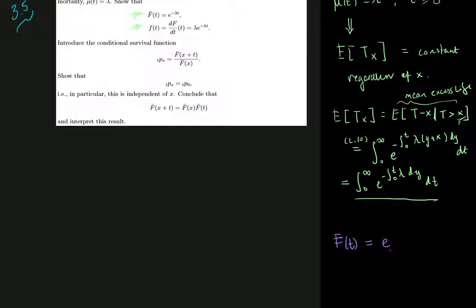According to page 25 of the book, it's given by e to the minus integral from 0 to t of the mortality rate. The density is then minus the derivative of the survival function.